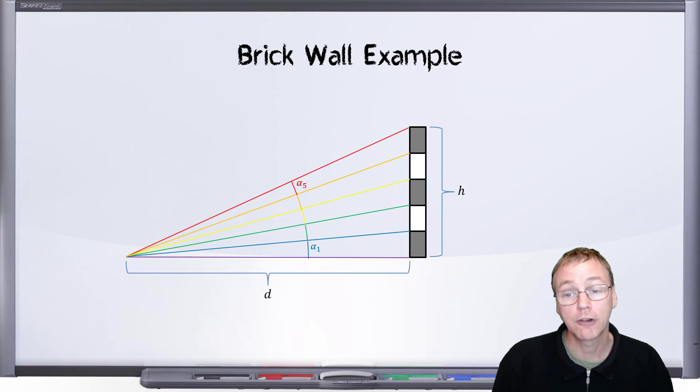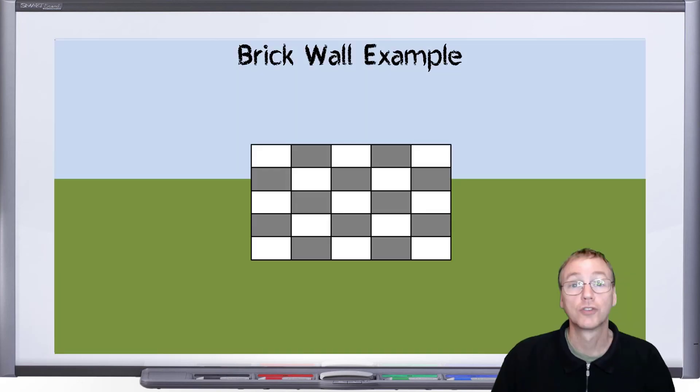At this point now, the Rayleigh criterion tells us at what point the angular size of an individual brick will make it no longer resolvable compared to its neighbor. So let's take a look at a brick wall painted in a checkerboard pattern, something like this.